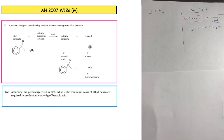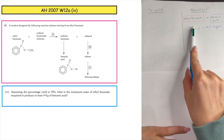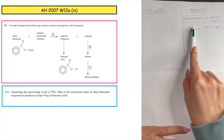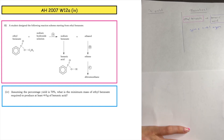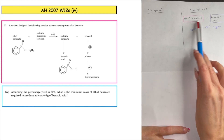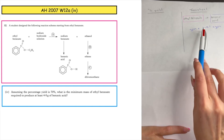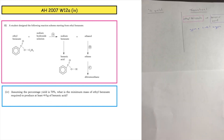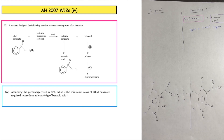This past paper question is from the Advanced Higher 2007, written 12a part 4. Assuming a percentage yield of 70%, what is the minimum mass of ethyl benzoate required to produce at least 4 grams of benzoic acid? We take down our entities, do our mole ratio, and times through by the GFM. The issue is that the GFM is not given, but they have provided molecular structures, which I've drawn out as full structural formulas.